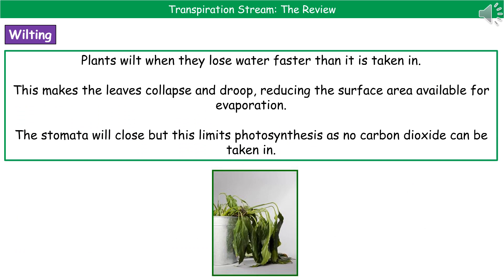If a plant is losing water faster than it's being taken in, the plant wilts — as shown in the picture. The plant leaves collapse and droop, reducing the surface area available for evaporation. The stomata will be closed, which limits photosynthesis, because as we said earlier the stomata allow carbon dioxide to diffuse into the plant. If the stomata are closed, carbon dioxide can't enter, so photosynthesis can't happen at the same rate.